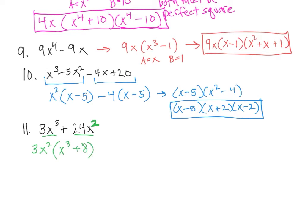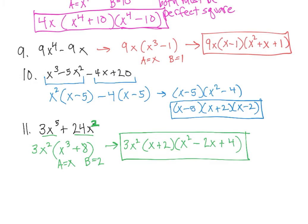x cubed plus 8, we can factor using the sum of the cubes. So we have 3x squared, and then it's a plus b, so x plus 2, times a squared, so that's x squared, minus a times b, so that's 2x, plus b squared, so 2 squared is 4. Whenever you do these factorings, make sure that whatever the greatest common factor was is included at the end of your problem.